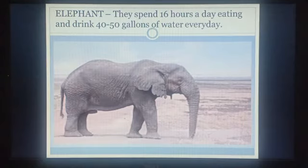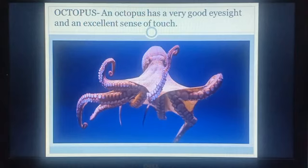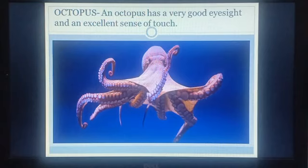Now, which animal is this? We have studied about this animal in our previous chapter — octopus, O-C-T-O-P-U-S. An octopus has very good eyesight and an excellent sense of touch. Octopus ki eyesight bhoat achchi hoti hai, aur jab us ki contact mein koi bhi animal aata hai, toh woh se bhoat jaldi pata hai, just because of its excellent sense of touch.